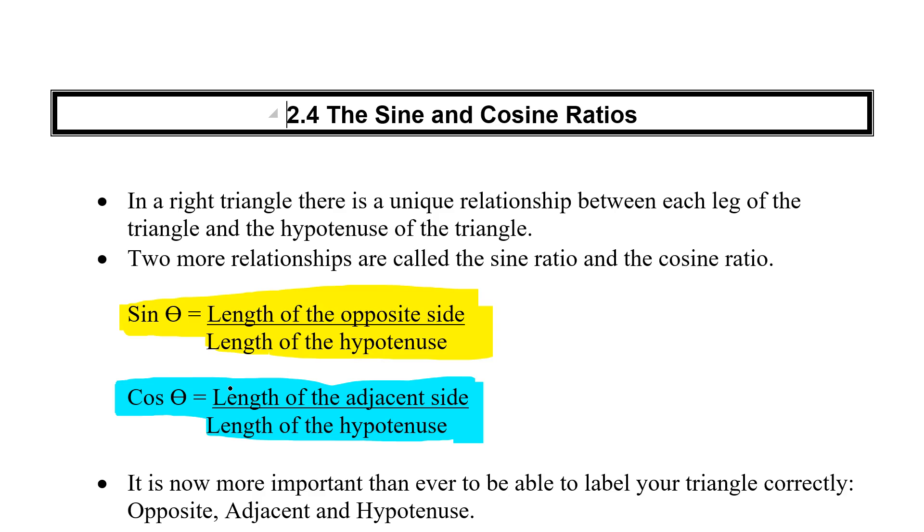Because we have multiple options, labeling the triangle is very important. So if we don't label correctly, we'll use the wrong formula, get the wrong answer. So again, our first step in every trigonometry problem is to label the opposite, label the adjacent, and label the hypotenuse.